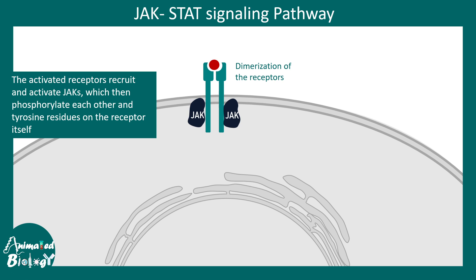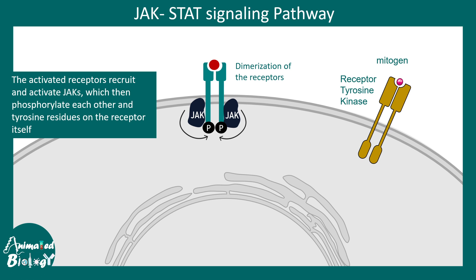The first thing JAKs phosphorylate is the receptor itself. This is similar to, but different from, receptor tyrosine kinase signaling. In receptor tyrosine kinase, the kinase activity is intrinsic to the receptor, but in the JAK-STAT pathway the kinase activity is not intrinsic. JAKs are soluble proteins that associate with the activated receptor and phosphorylate it.